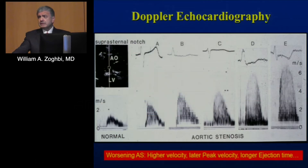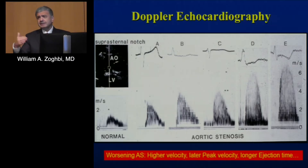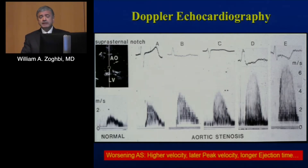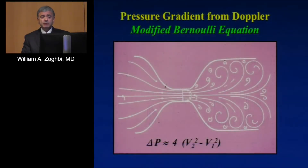With increasing narrowing of a valve, there is a change in velocity across it. This is from the classic work of Liv Hatley, the 'mother of Doppler echocardiography.' With increasing severity of aortic stenosis, the velocities across the valve increase and the shape changes. Peak velocity becomes later and later in systole — pulsus tardus — and ejection time increases. Although these are qualitative, they can help you tremendously.